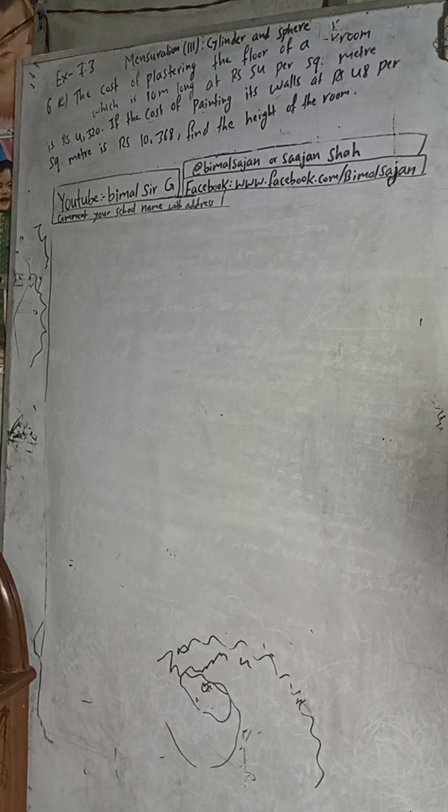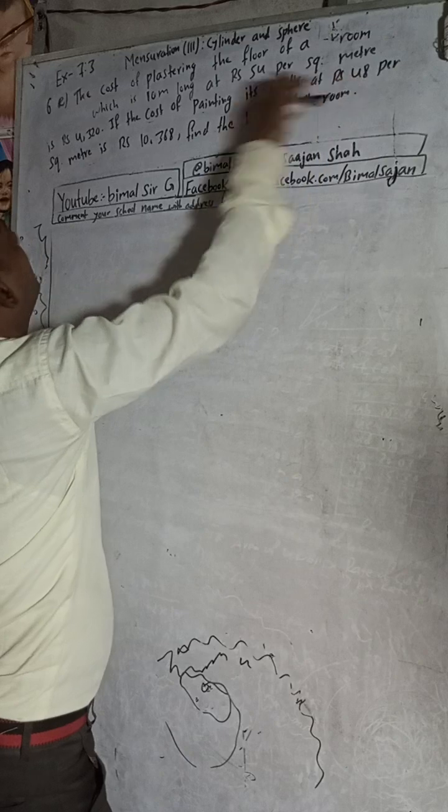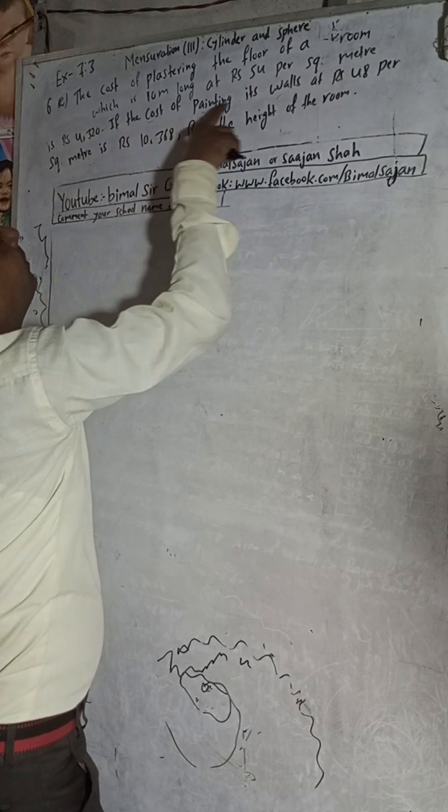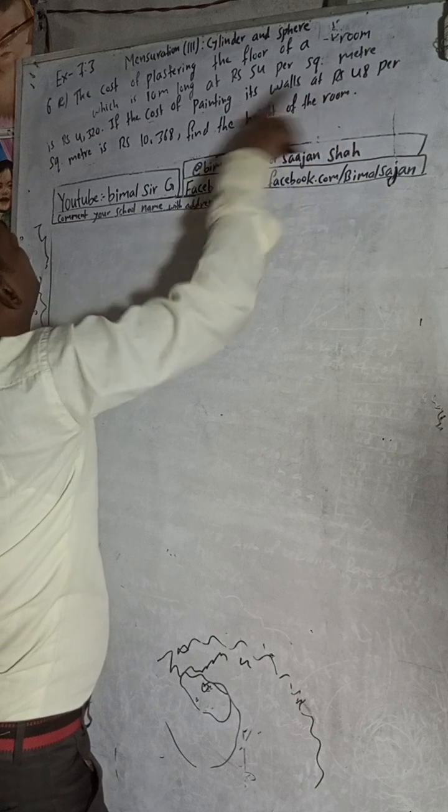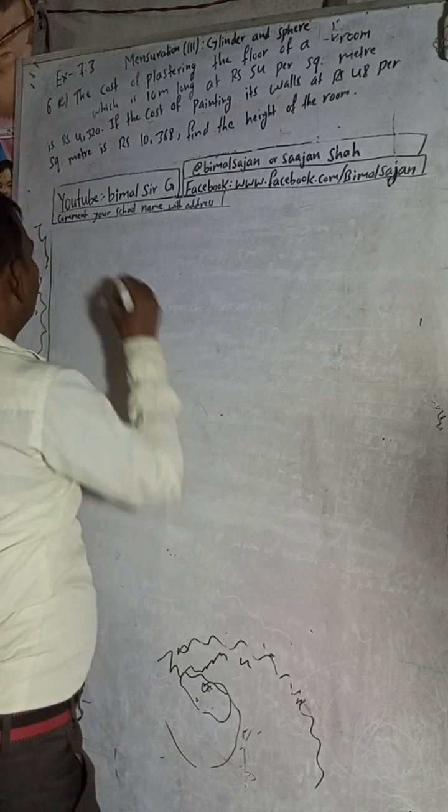The cost of plastering the floor of a room, which is 10 meter long, at Rs. 54 per square meter is Rs. 4320. If the cost of painting its walls at Rs. 48 per square meter is Rs. 10368, find the height of the room.